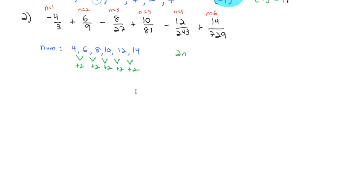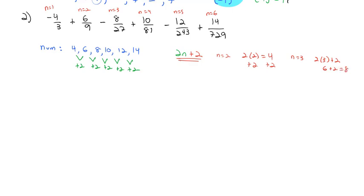So I might try 2n. The problem is when n equals 2, we want 6, but 2 times 2 is only 4. So we add an extra 2: 2n plus 2. Let's verify with n equals 3: does that give us the 8 we expect? 2 times 3 plus 2 equals 6 plus 2 equals 8, just like we'd expect for the third term. So the numerator is 2n plus 2.